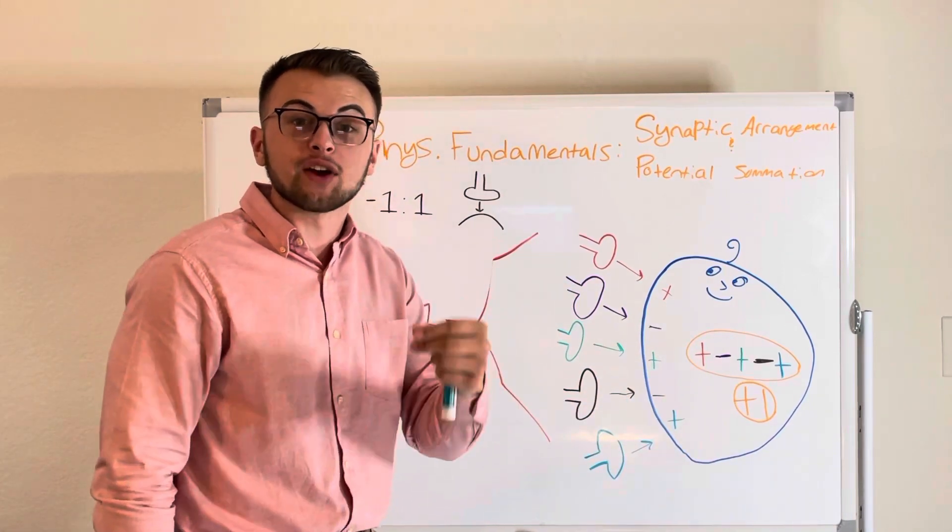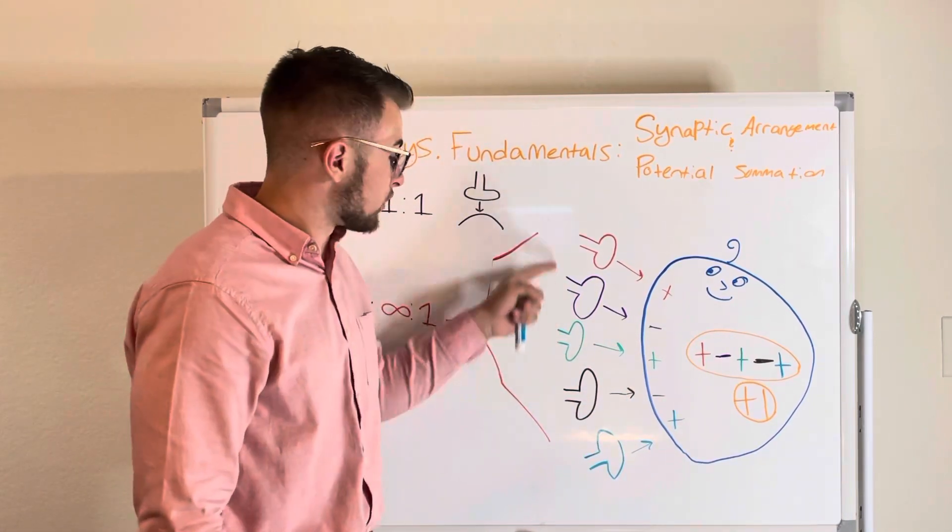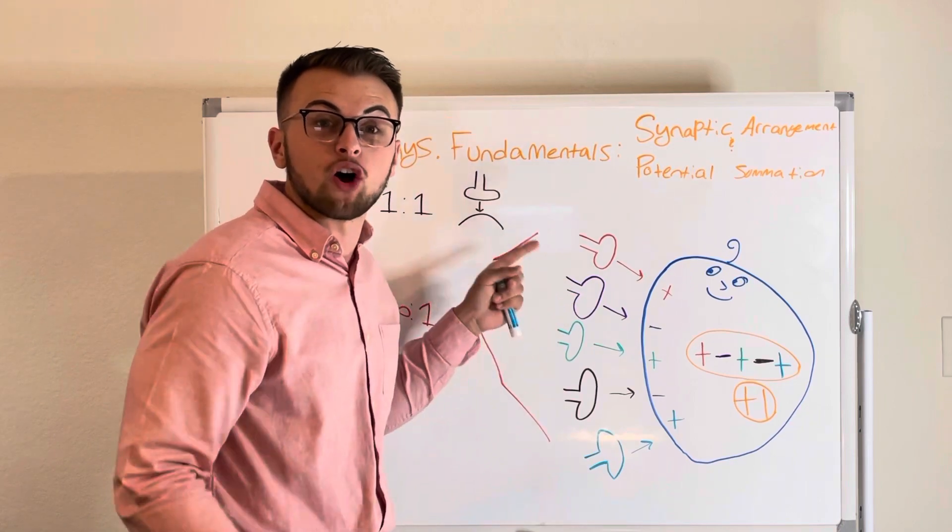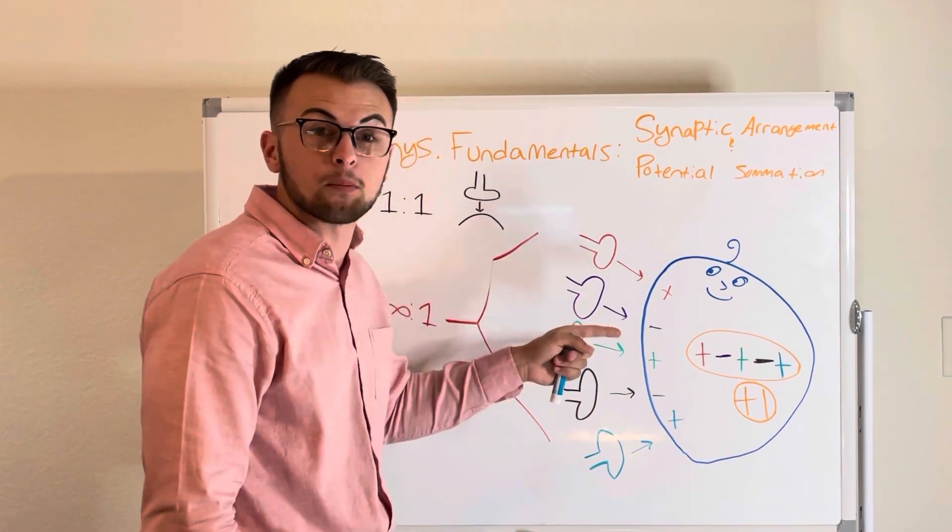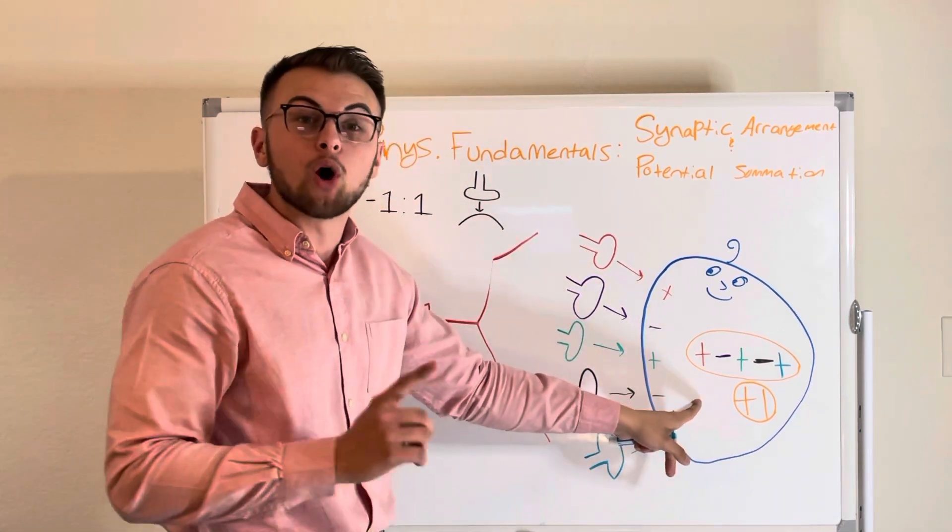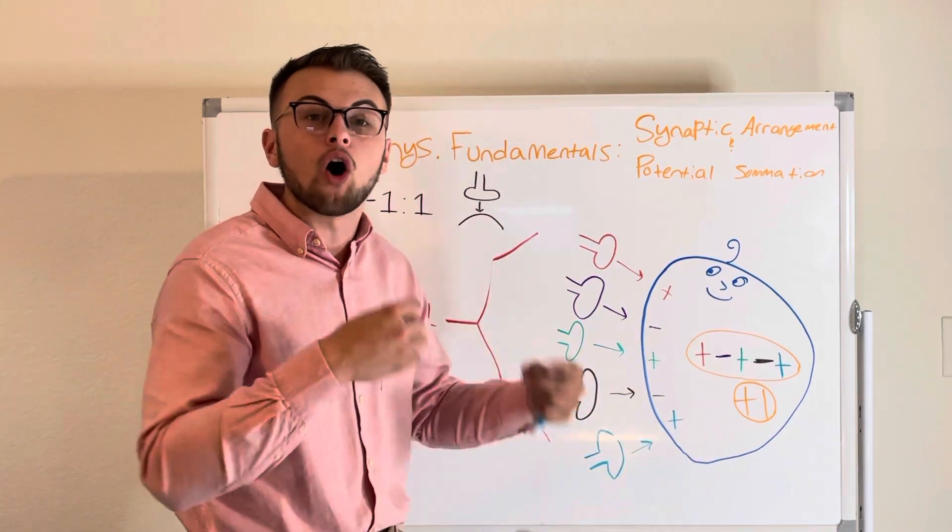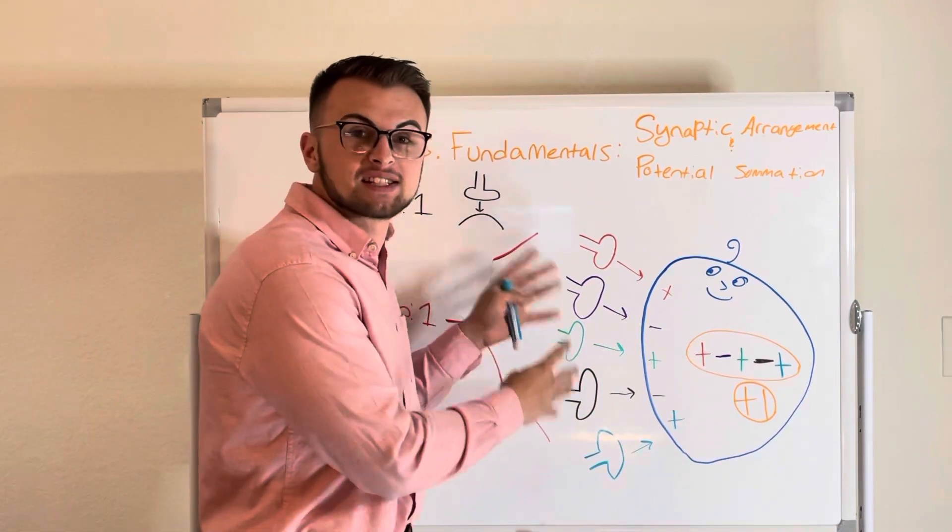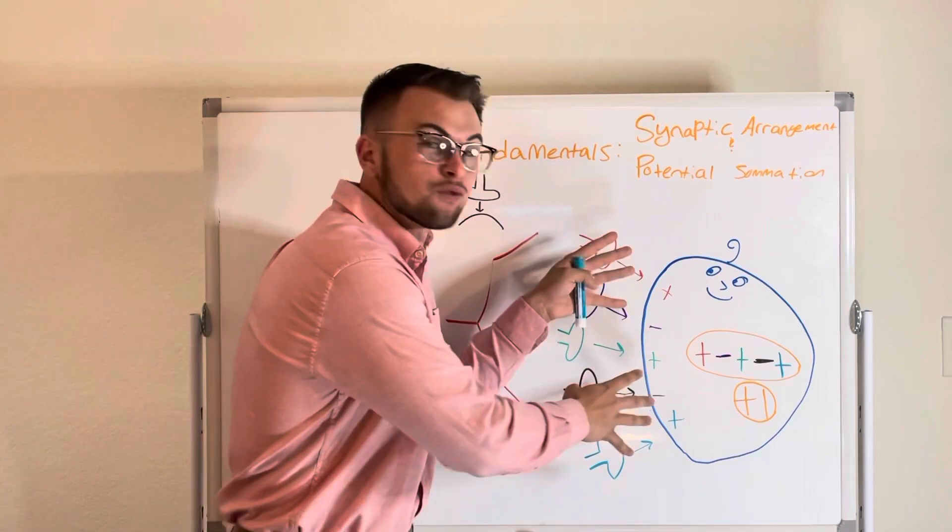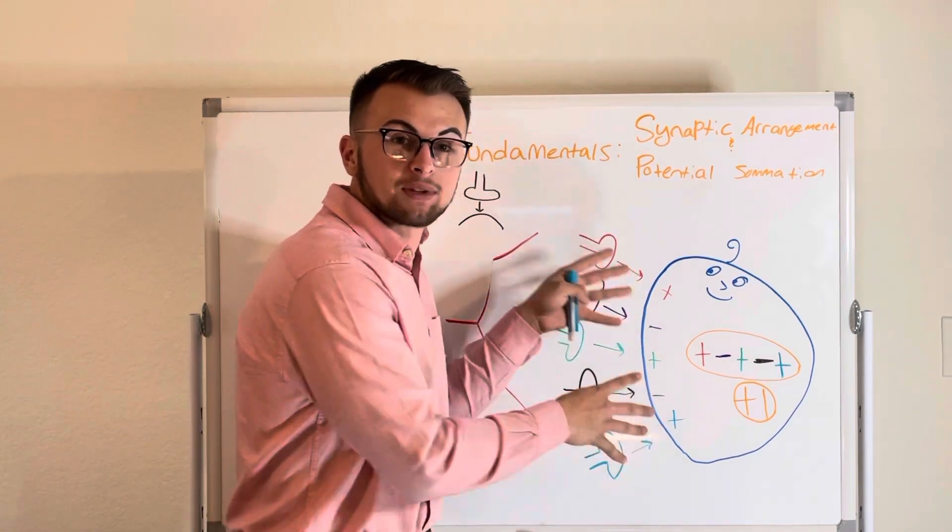For example, there could be five presynaptic cells that all synapse on the cell body of one postsynaptic cell. All of these presynaptic cells will try and influence our one postsynaptic cell.